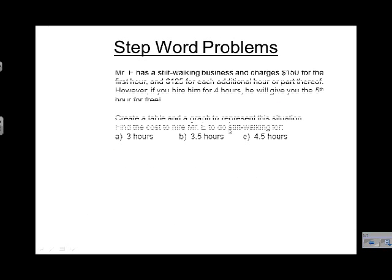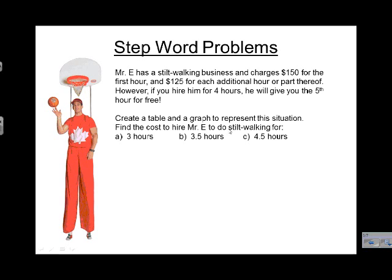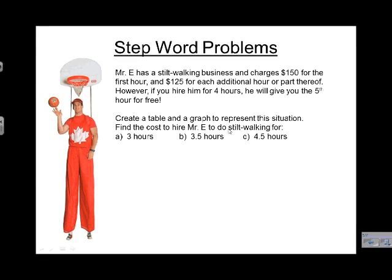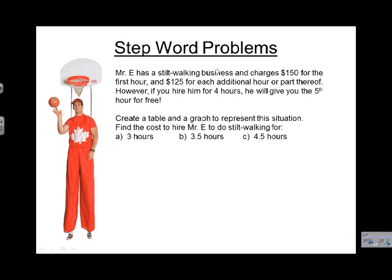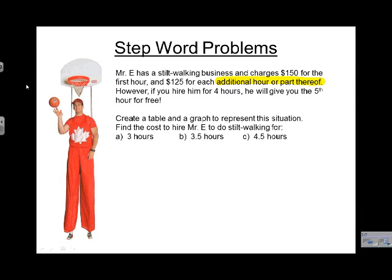Let's take a look at a word problem now. Mr. E has a stilt walking business and charges $150 for the first hour and $125 for each additional hour or part thereof. However, if you hire him for four hours, he'll give you the fifth hour for free. Create a table and graph to represent the situation. And find the cost to hire Mr. E to do stilt walking for three hours, three and a half hours, and four and a half hours. First thing we need to do is identify it as being a step function. The easiest way to do that is take a look right here. It says additional hour or part thereof. What does that mean? That means that even if he doesn't come for a full extra hour, you still have to pay him for the entire hour. So this is a strong indication that we've got a step function here.